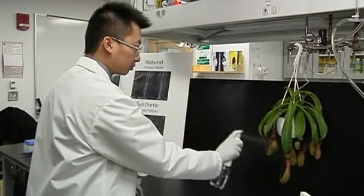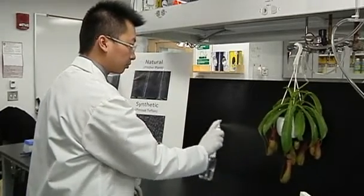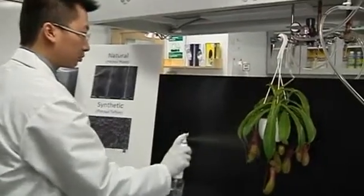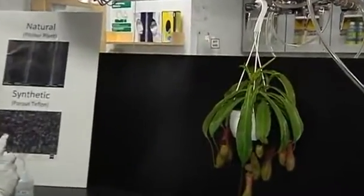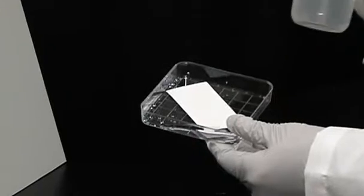Researcher Tak Sing Wang says SLIPS is a thin film that can be tailor-made to protect almost any porous surface from liquid penetration. So when water is hitting on this surface, it just remains dry.